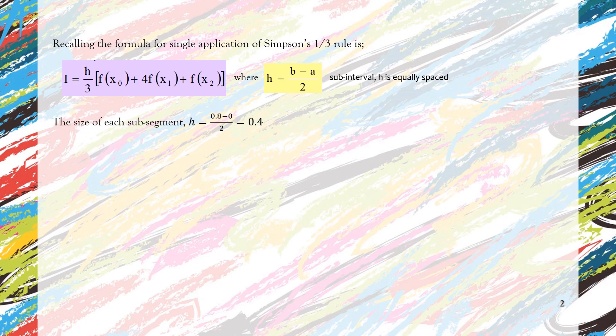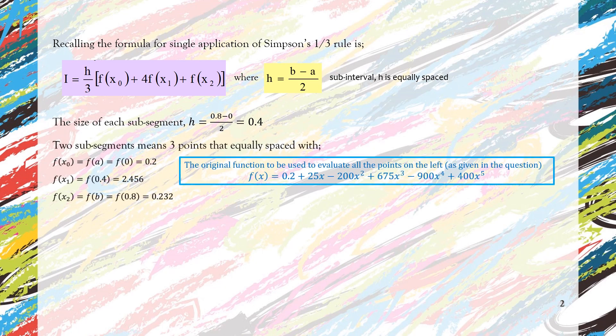We can calculate the sub-interval size, which is equal to 0.4. Since we have two sub-segments, we have three points: f(x₀), f(x₁), and f(x₂).